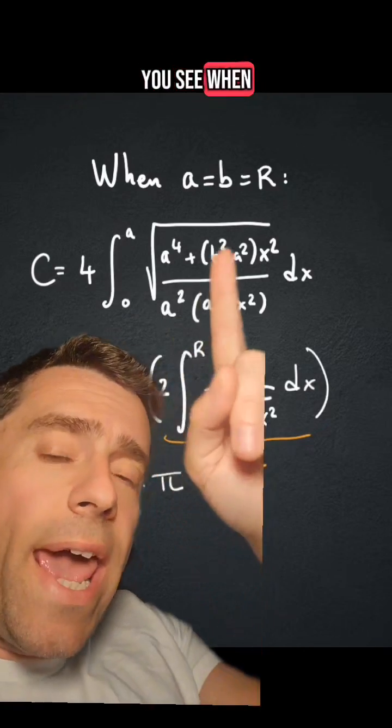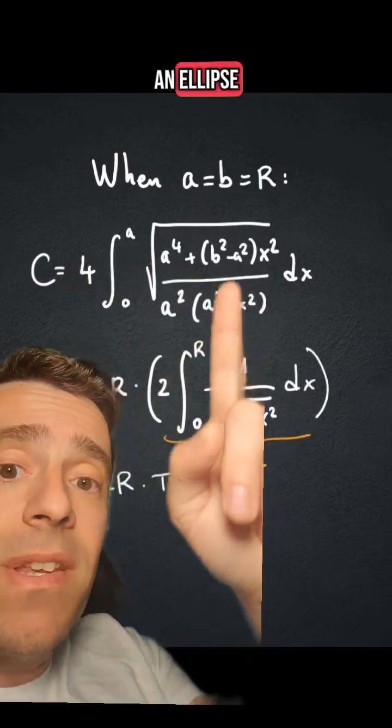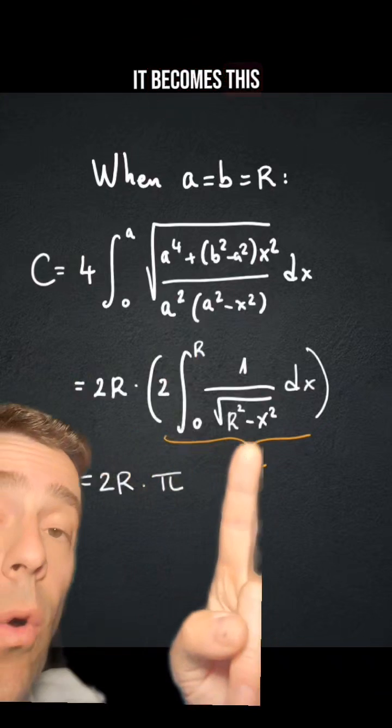You see, when a equals b equals r, what happens with the formula for the circumference of an ellipse? It becomes this other formula...